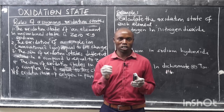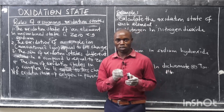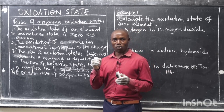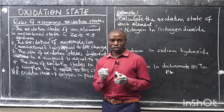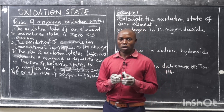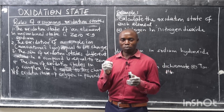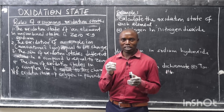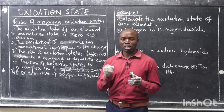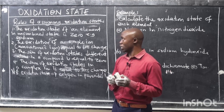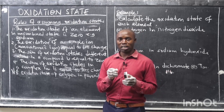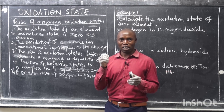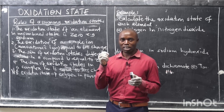You need to understand what we mean by oxidation states and oxidation numbers. Oxidation state is the charge that represents the total number of electrons that any element has engaged in during chemical bonding with another atom or element. Oxidation state should not be mistaken with valence — valence has no charge, but oxidation state has a charge.